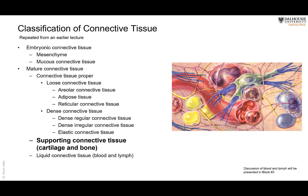Before we start with the cartilage, let me remind you of the properties of connective tissue. Connective tissue has cells and matrix. The cells are widely separated from each other by an interstitial matrix, and the matrix contains fibers and chemical substances — collagen fibers, elastic fibers, and reticular fibers. This same plan is present in cartilage: there are cells, a matrix, and fibers. The change in physical properties is because of the different chemicals in the matrix, but the design is almost the same.